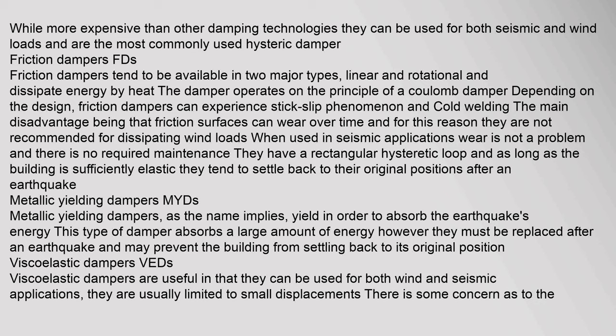Friction dampers (FDs) tend to be available in two major types — linear and rotational — and dissipate energy by heat. Depending on the design, friction dampers can experience stick-slip phenomenon and cold welding; friction surfaces can wear over time and are not recommended for wind loads, though wear is not a problem in seismic applications. They have a rectangular hysteretic loop and tend to settle back to their original positions after an earthquake. Metallic yielding dampers (MYDs) yield to absorb earthquake energy but must be replaced after an earthquake.